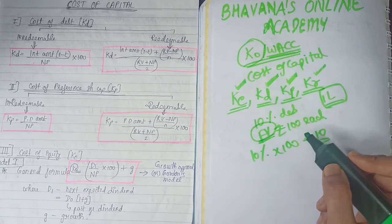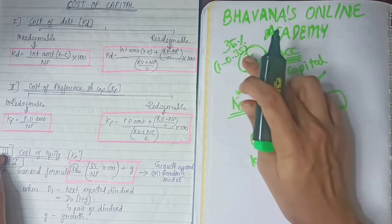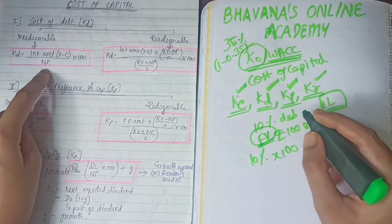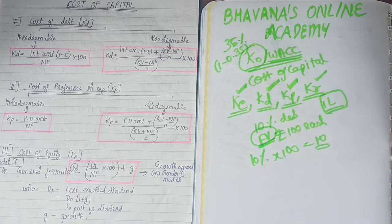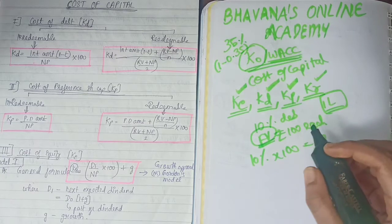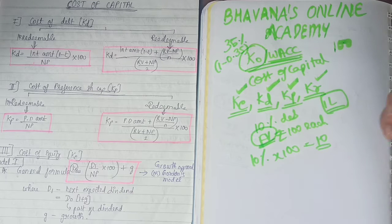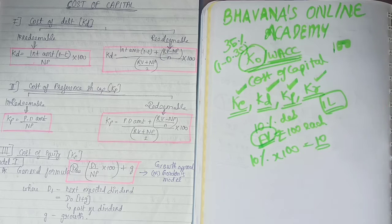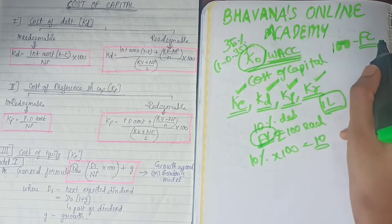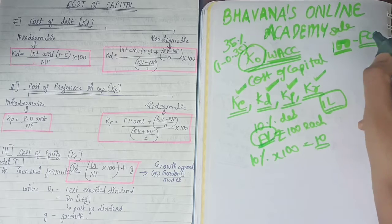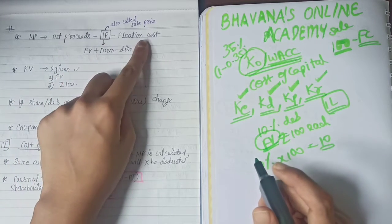In the formula, (1 − T) means 1 minus the tax rate. If the tax rate is 35%, you do 1 − 0.35. Net proceeds (NP) is how much money you actually received when you took the debt. When you get a loan of ₹100, you will incur certain expenses known as flotation cost. Net proceeds = Issue Price − Flotation Cost.